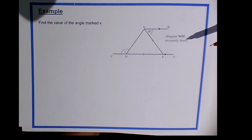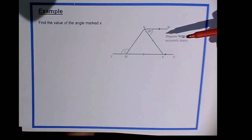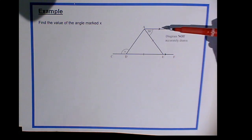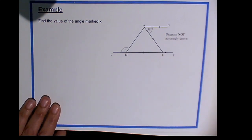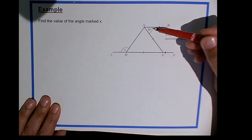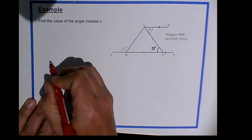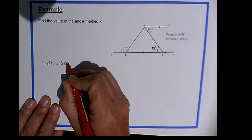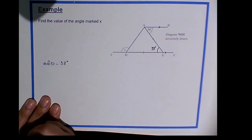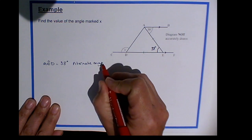There are several different ways to find angle X by finding some angles first. The best way to start these problems is to think about what rules you know and whether there are any angles you can find straight away. Looking at the parallel lines, there's a Z shape, and when we see a Z shape we think about alternate angles. We have 38 degrees here, so this angle — angle AED — is also going to be 38 degrees. Alternate angles are equal.